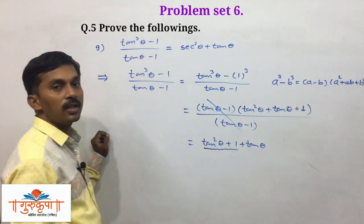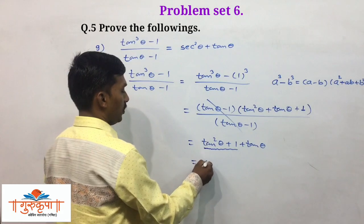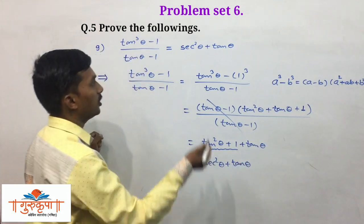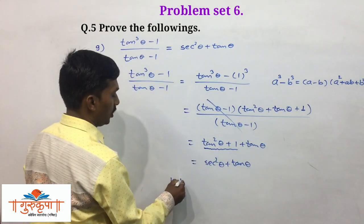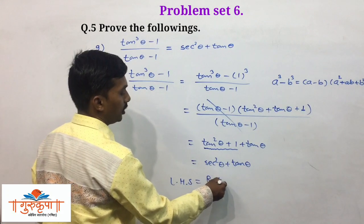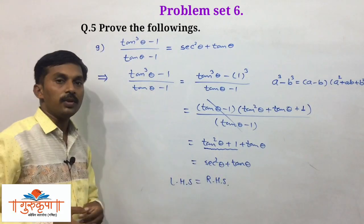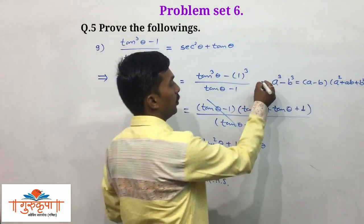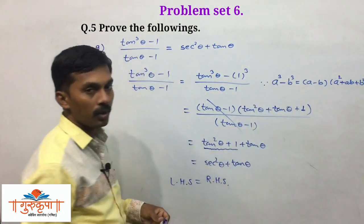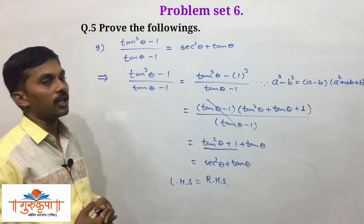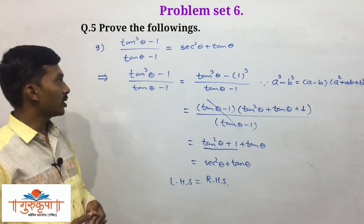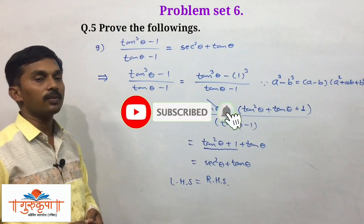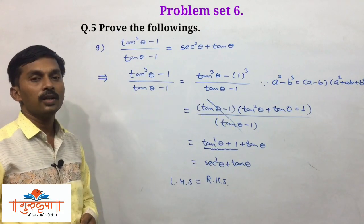The (tan theta minus 1) factors cancel, leaving tan squared theta plus tan theta plus 1. Rewriting as tan squared theta plus 1 plus tan theta — since 1 plus tan squared theta equals sec squared theta — we get sec squared theta plus tan theta, which is RHS. So LHS equals RHS. This is all about example number 9. We will take the last example from question number 5 — example number 10.